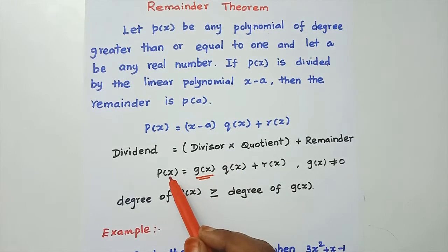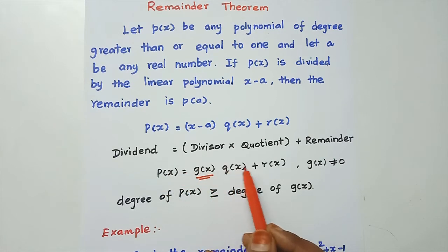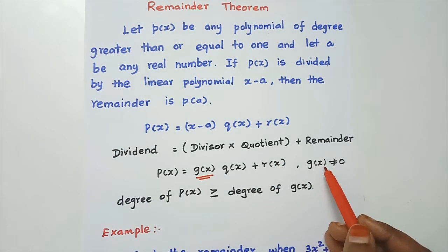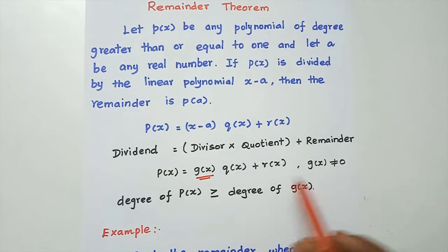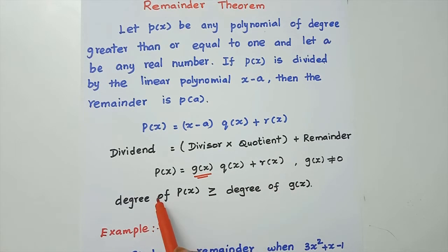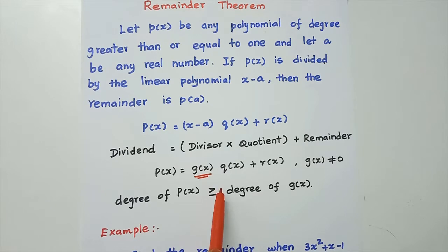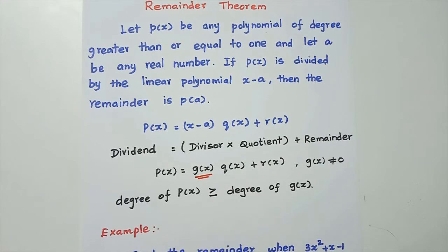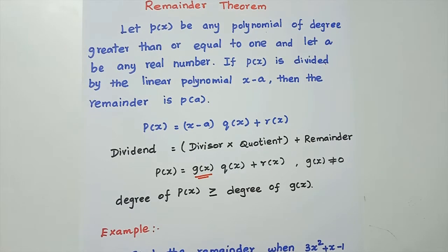Now we have to figure out the polynomial. p of x equals g of x into q of x plus r of x, where g of x is the divisor. The degree of p of x is greater than or equal to the degree of g of x. This is the condition. Now, p of x divided by the linear polynomial x minus a — this is the remainder theorem.